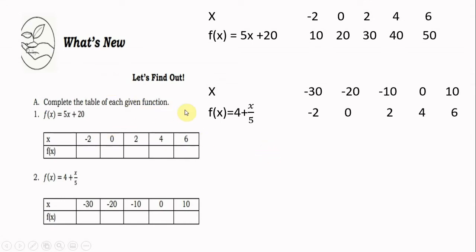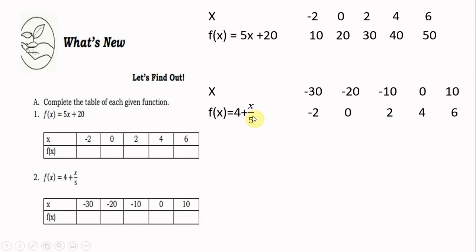What's New — complete the table for f(x) = 5x + 20 with x = −2, 0, 2, 4, 6: the values are 10, 20, 30, 40, 50. For the second function with inputs x = −30, −20, −10, 0, 10: dividing and adding 4 each time gives outputs −2, 0, 2, 4, 6.